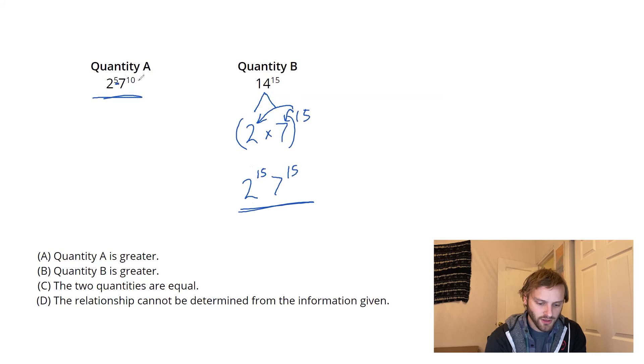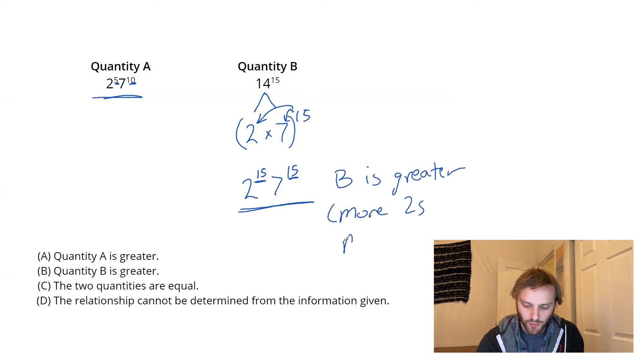And the value of the exponents are higher in both cases on the right in quantity B. So, what that means is I have more 2s in quantity B. I have more 7s in quantity B. B is greater. More 2s, more 7s being multiplied. That's going to accumulate to a larger number.